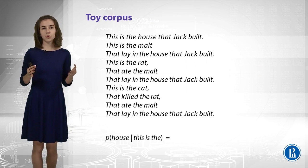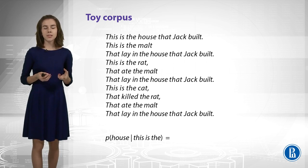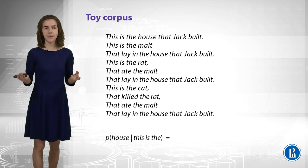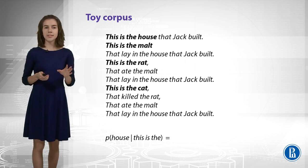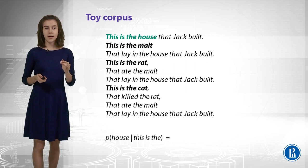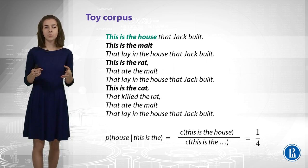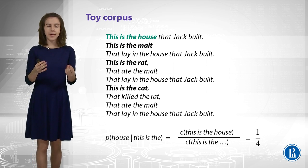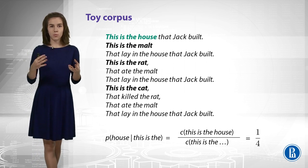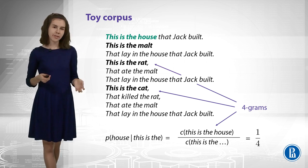So, let us get some toy corpus. This is a nice toy corpus about the house that Jack built. And let us try to use it to estimate the probability of 'house' given 'this is the.' So, there are four interesting fragments here, and only one of them is exactly what we need: 'this is the house.' So, it means that the probability will be one out of four. By c here, I denote the counts. So, this is the count of 'this is the house' or any other pieces of text. And these pieces of texts are n-grams. An n-gram is a sequence of n words. So, we can speak about four-grams here. We can also speak about unigrams, bigrams, trigrams, etc.